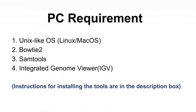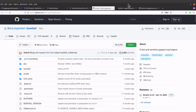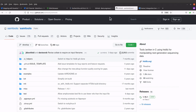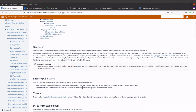To follow and reproduce this tutorial you need a Unix-like operating system, i.e., Linux or macOS. You should also have bowtie2, samtools, and IGV installed. Instructions for installing these three tools are available in the description box. You can also read more about these tools by visiting their respective web pages — bowtie2 and samtools have GitHub pages, and IGV also has a website.